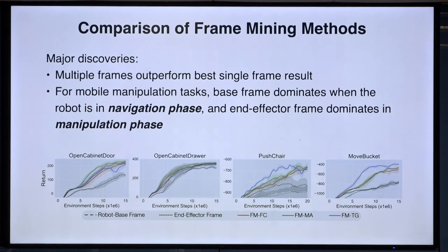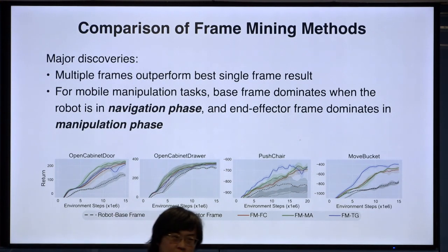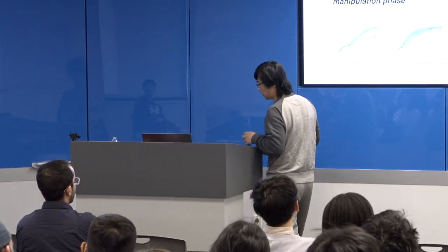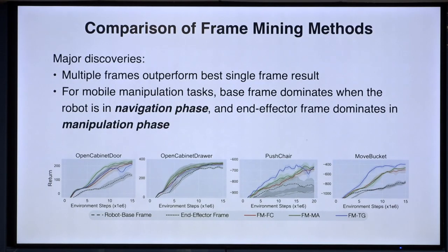For mobile manipulation tasks, during the initial stage when the robot approaches the object, the base frame has higher weights. Once manipulation starts, the end-effector frame gains higher weights. The key insight is that for 3D point cloud reinforcement learning, considering and combining different frames with careful tuning is important — more impactful than the specific architecture choice between transformers or other methods.